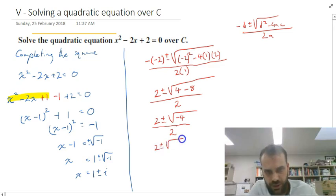2 plus or minus the square root, positive 4 times i squared. Okay, so i squared is negative 1 times 4, that makes negative 4, all over 2.